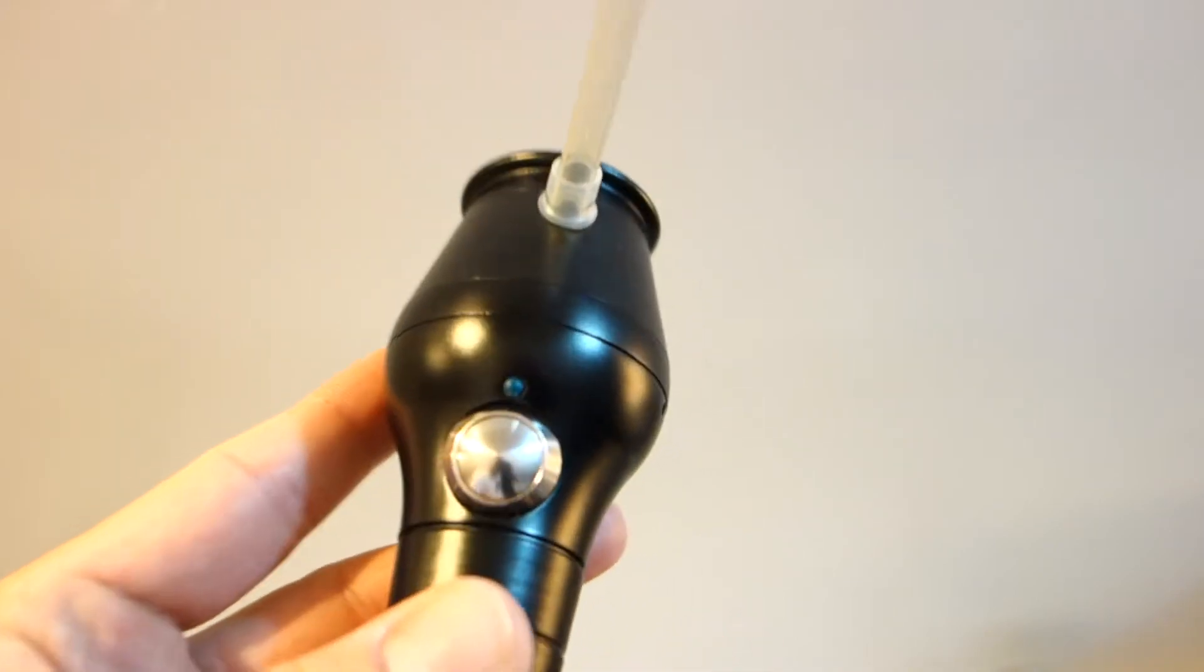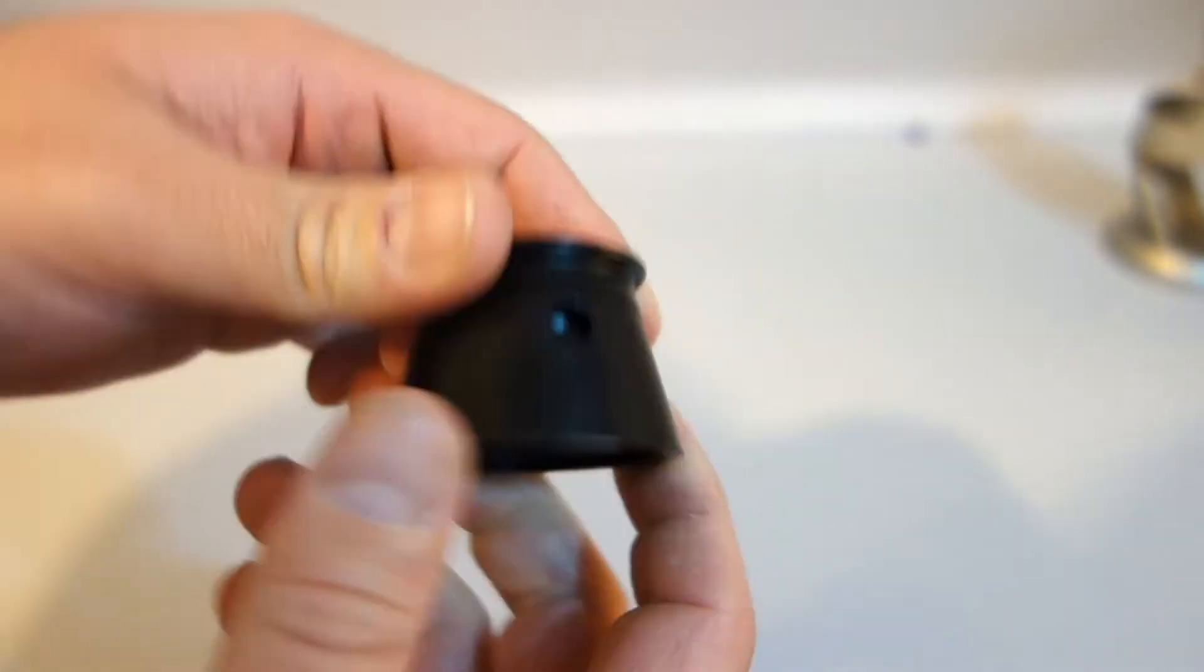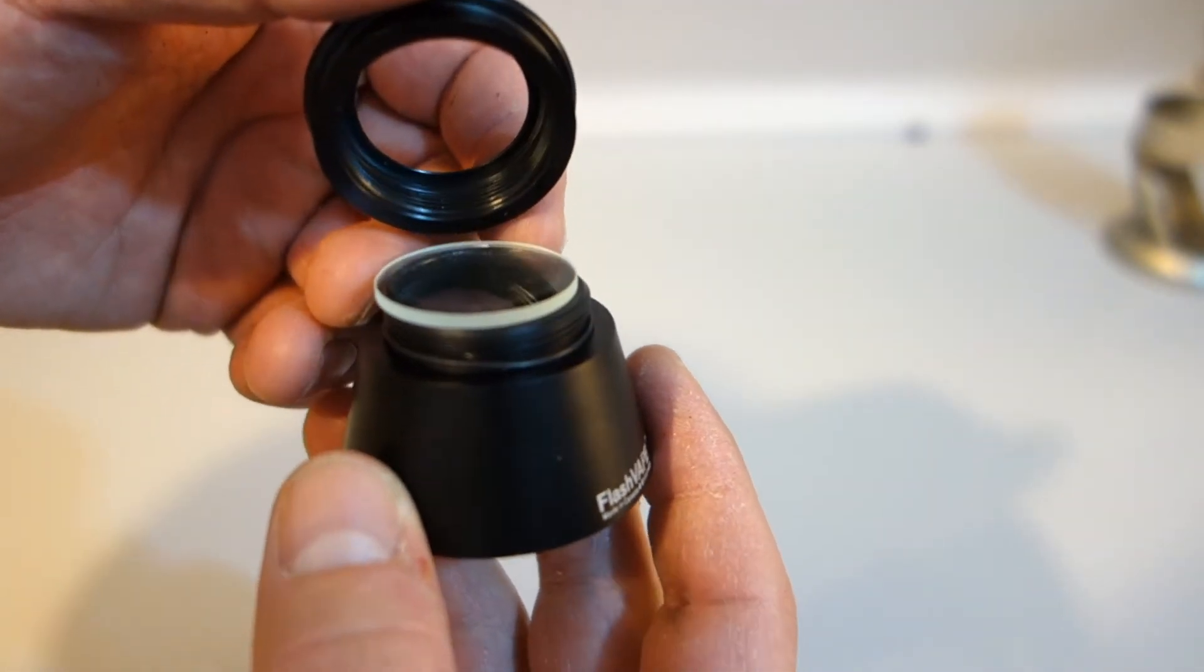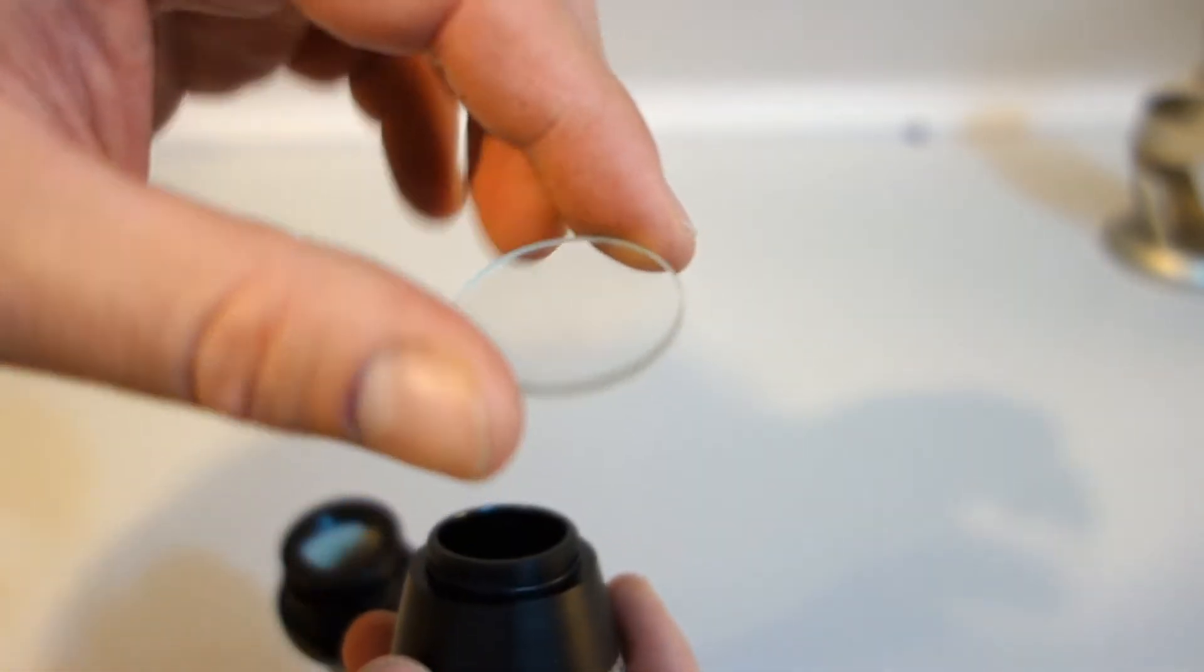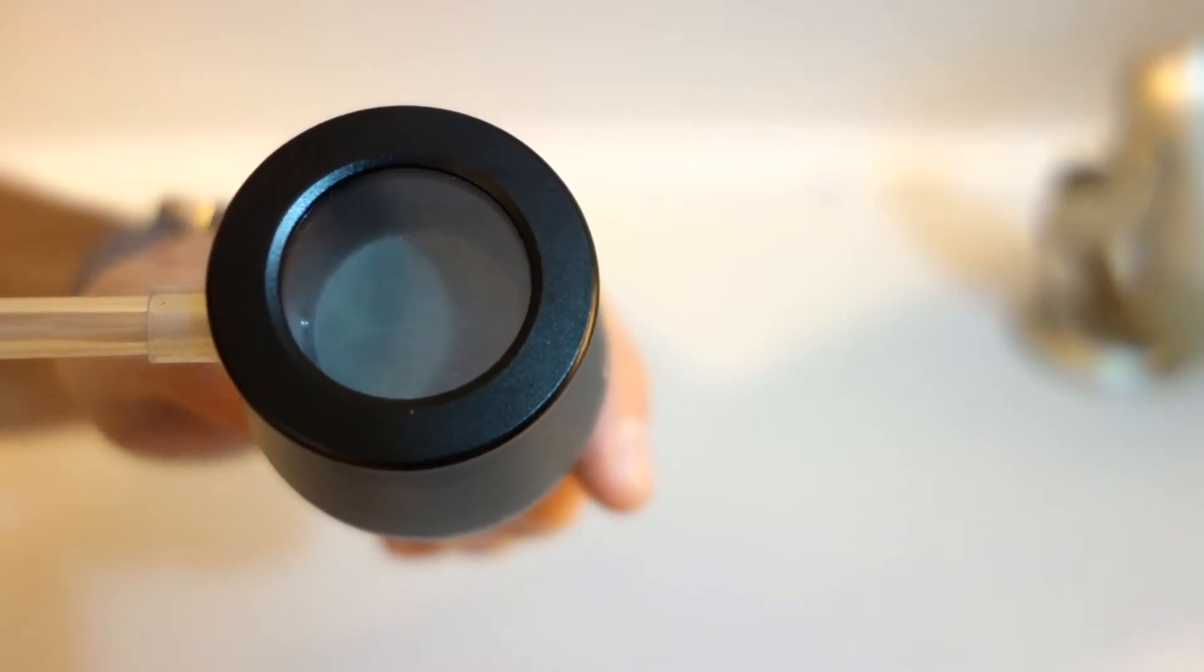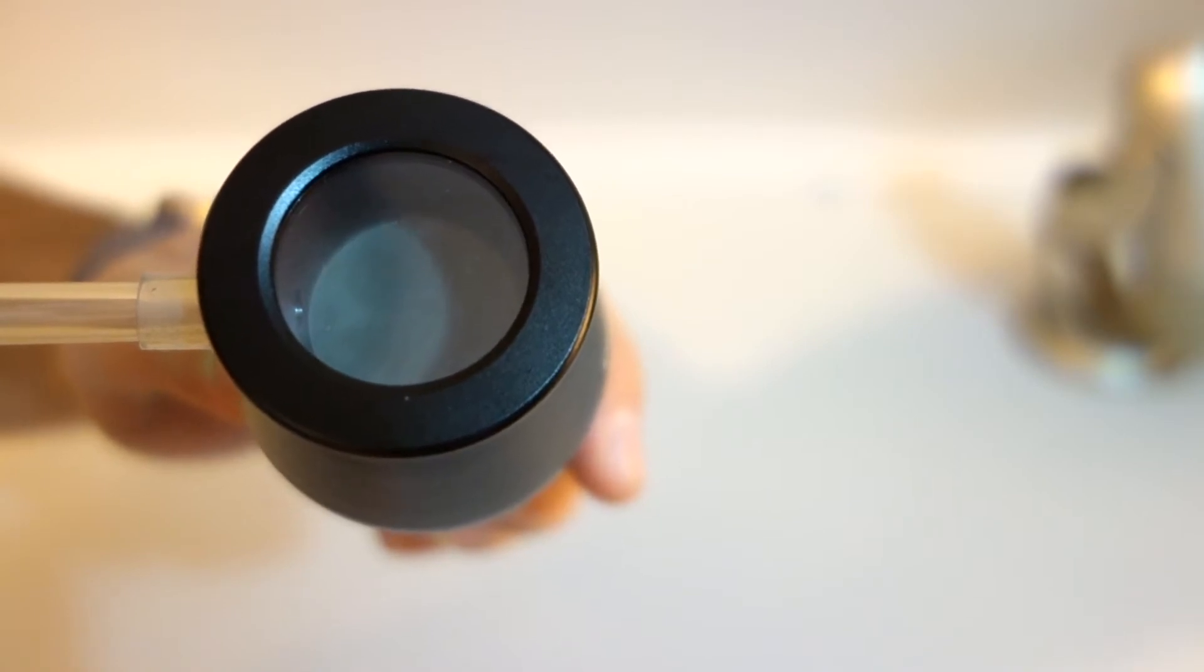The last thing I want to touch on in regards to build quality is the see-through circular glass at the top of the vaporizer. This tempered glass which is removable for cleaning purposes allows the user to see the vapor production forming while vaporizing which I think is very cool and a neat design choice.